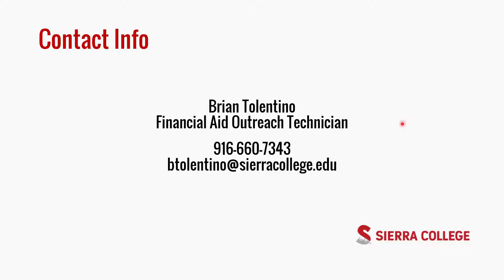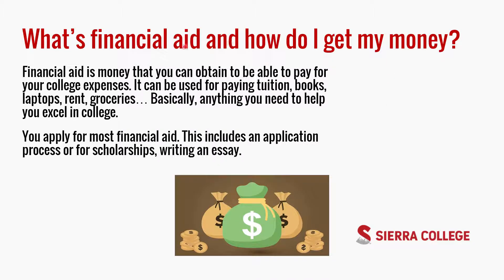Here's my contact information if you need it or have any questions. So what exactly is financial aid and how do you get your money? Financial aid is the money that you can get to pay for your college expenses — that could be anything between tuition, books, laptops, rent, groceries, anything that you need to excel in college. In order to get financial aid, you do have to apply for it, typically through the FAFSA, the California Dream Act, or for scholarships you may need to write an essay.